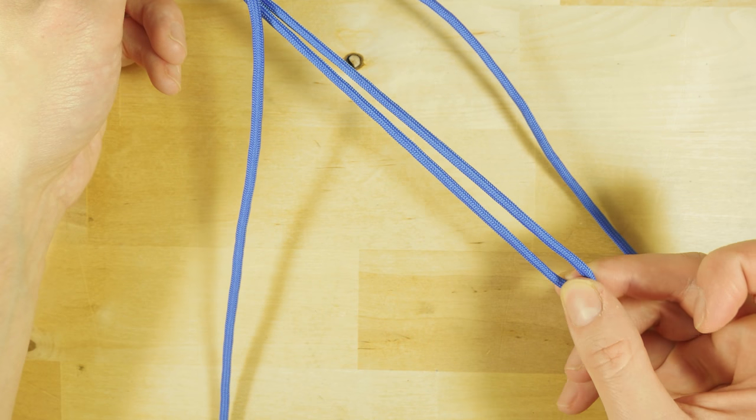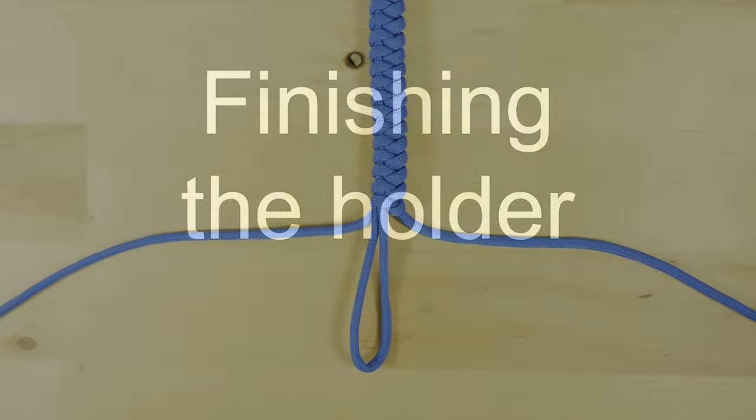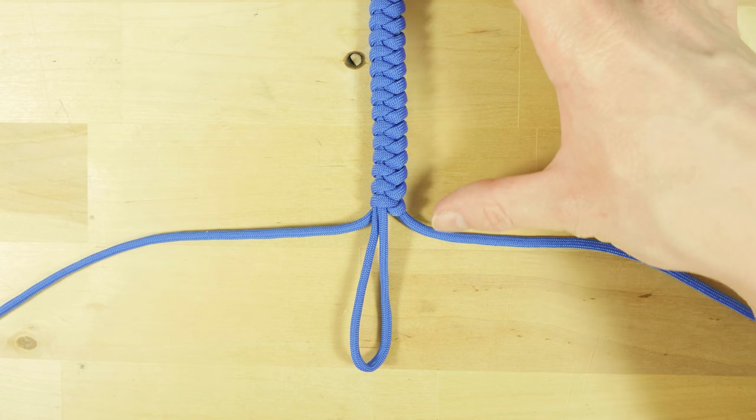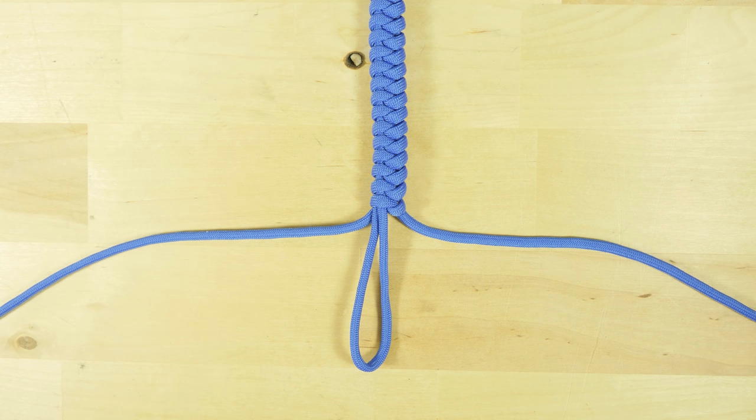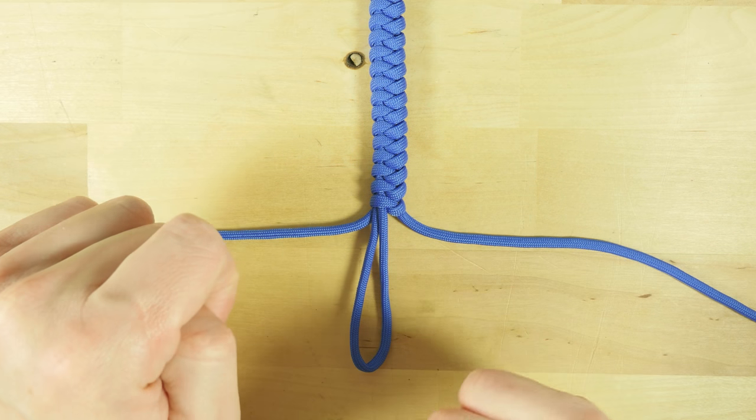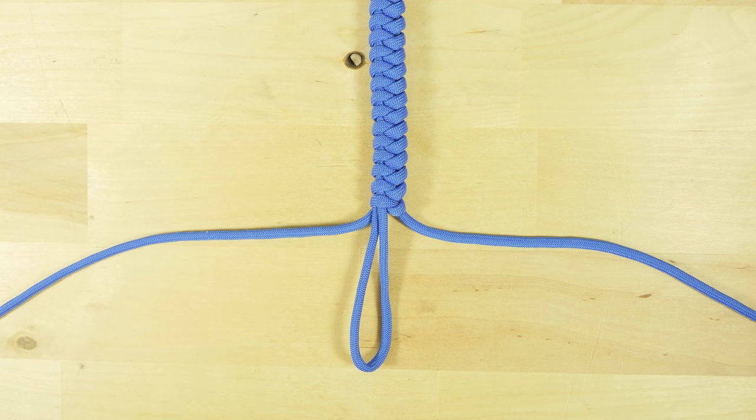Continue lining up these knots until you cover the body and you have a little bit of the loop remaining. At that point, we're going to finish up the holder. After lining up a series of these knots, the body of the holder is pretty much complete. At this point, you can choose to trim the two ends, melt them and the holder is complete.